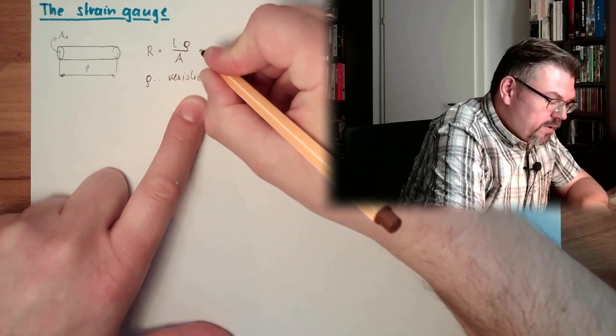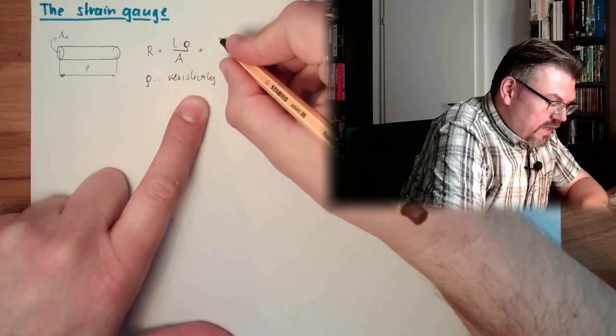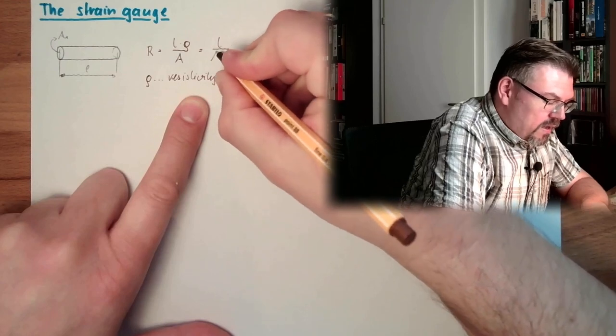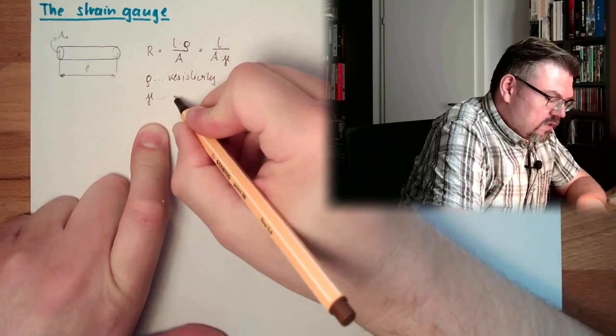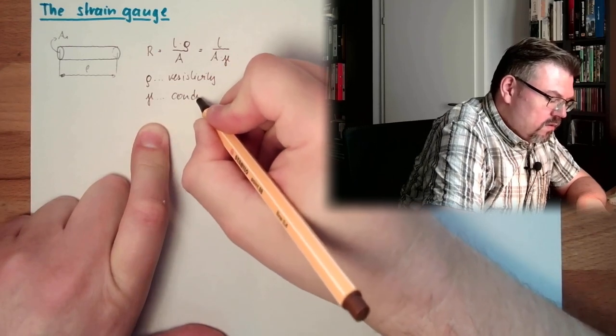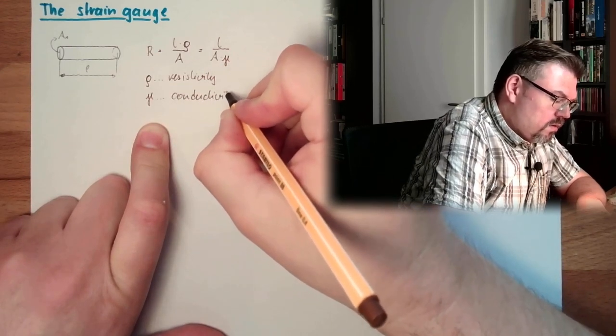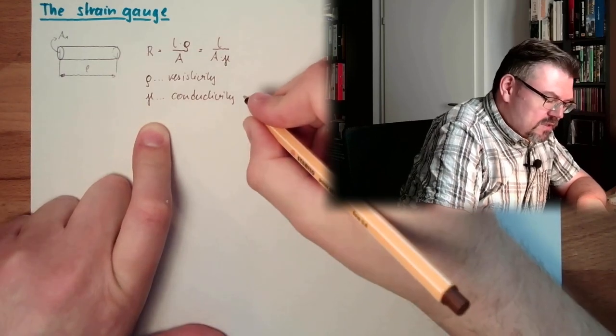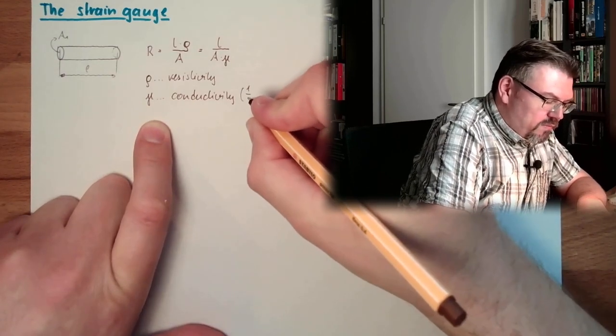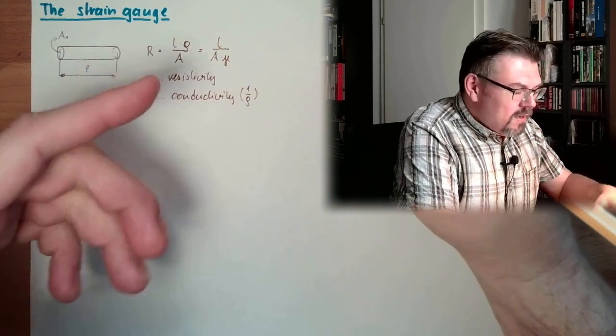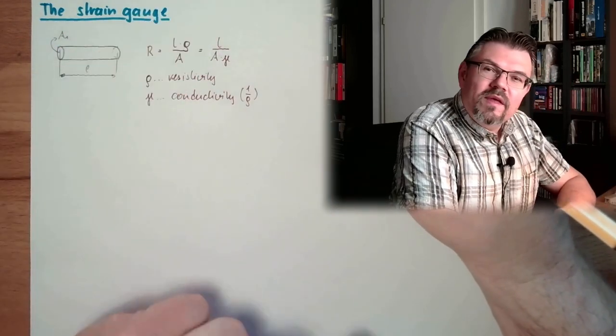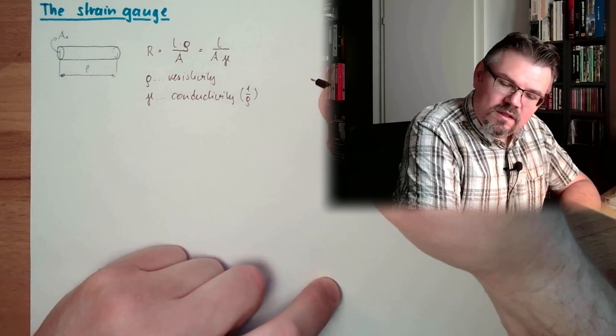However, we could also write this is L divided by A multiplied by gamma. And this gamma is the conductivity. It's just one divided by rho. So those two things are depending on the material.